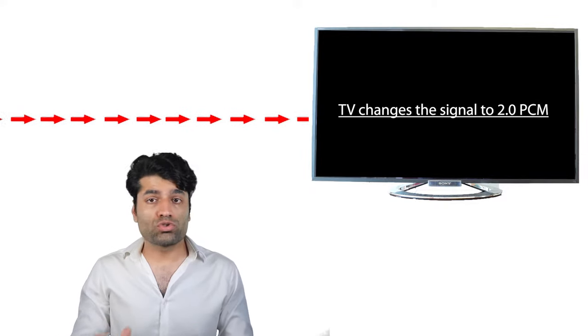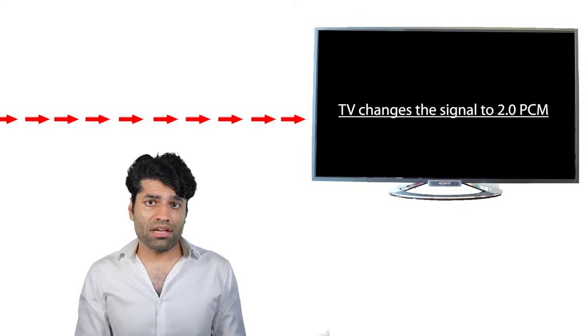When selecting PCM input, the TV changes the signal to 2.0 PCM. That means if you then connect the TV to a sound system capable of multi-channel audio, it would only receive two-channel sound. In other words, don't select the PCM input option if you are planning to connect your TV to a sound system with more than two channels. When selecting PCM, your TV won't need to process the audio, and you will get better quality audio through your TV's speakers.